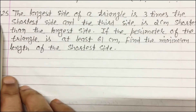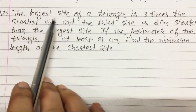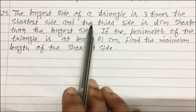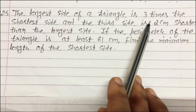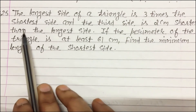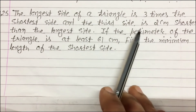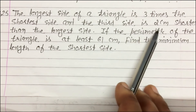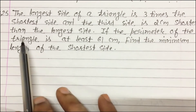Question number 25: The longest side of a triangle is 3 times the shortest side, and the third side is 2 cm shorter than the longest side.